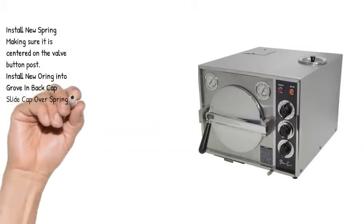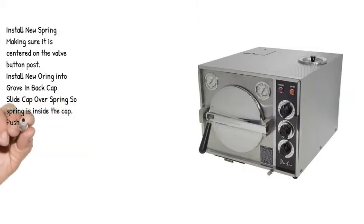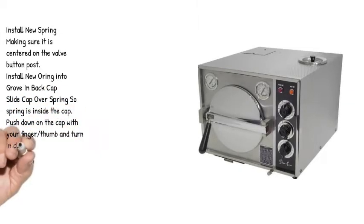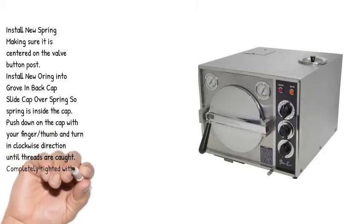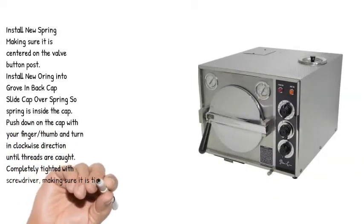Install new o-ring into groove in back cap. Slide cap over spring so spring is inside the cap. Push down on the cap with your finger or thumb and turn in clockwise direction until threads are caught. Completely tighten with screwdriver, making sure it is tight.